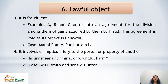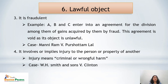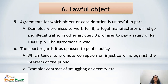The fourth case is when a contract involves or implies injury to the person or property of another. Any agreement involving injury to the person or property of another can never be a valid contract. Injury means doing something criminally or causing wrongful harm to a person. This is clarified in the case of W.H. Smith and Sons versus Clinton: A promised to pay B, an editor of a newspaper, rupees 500 to publish a defamatory article against C so that C's reputation would be harmed. This type of contract is a void agreement.